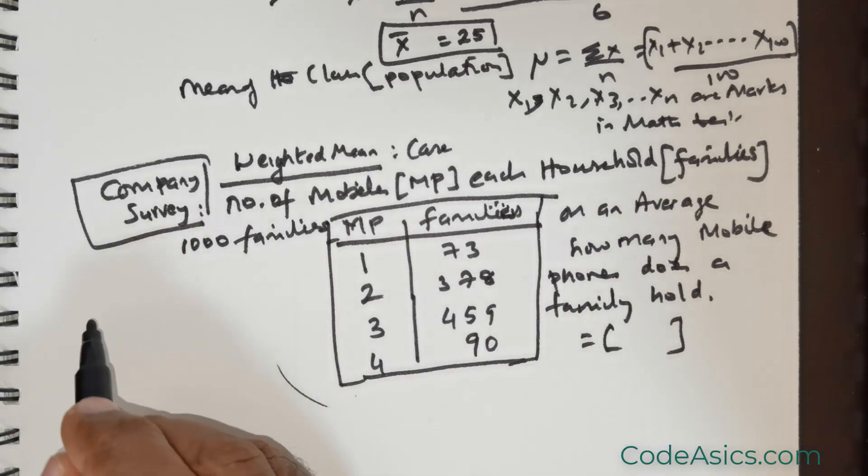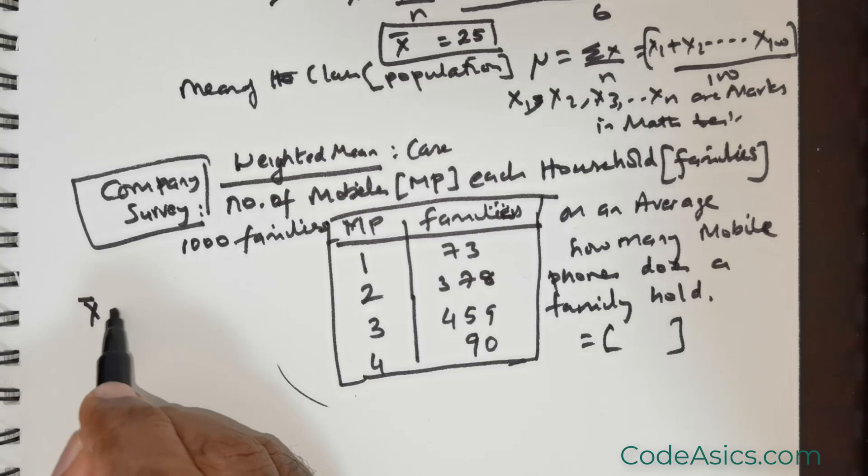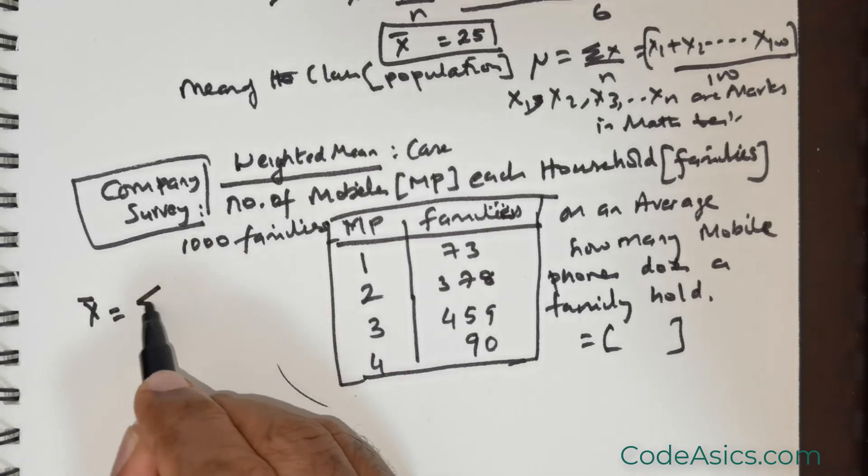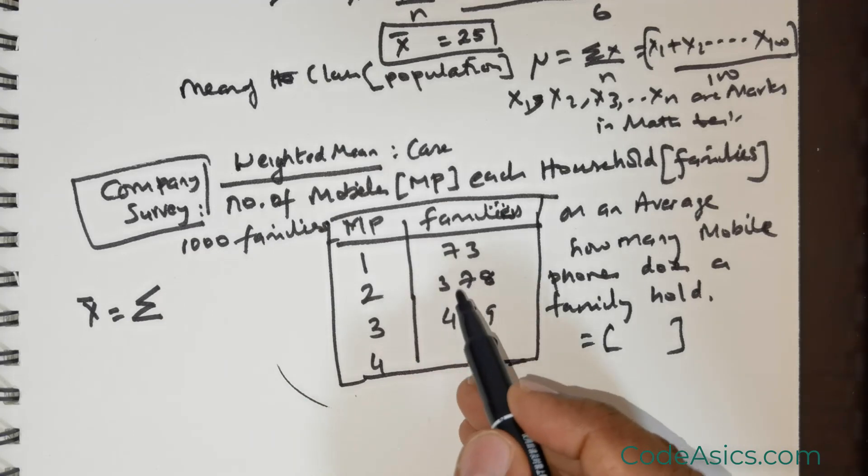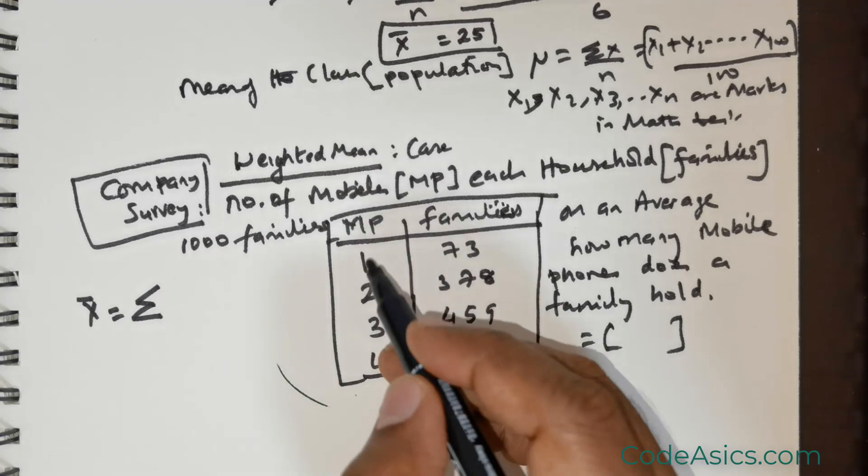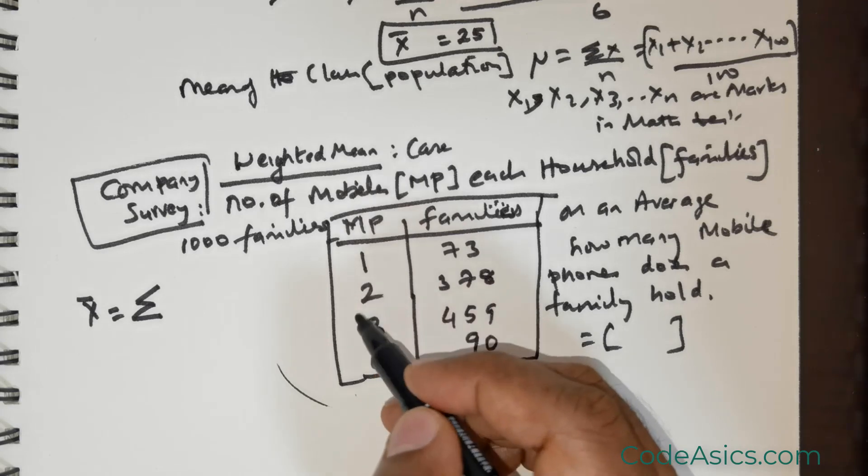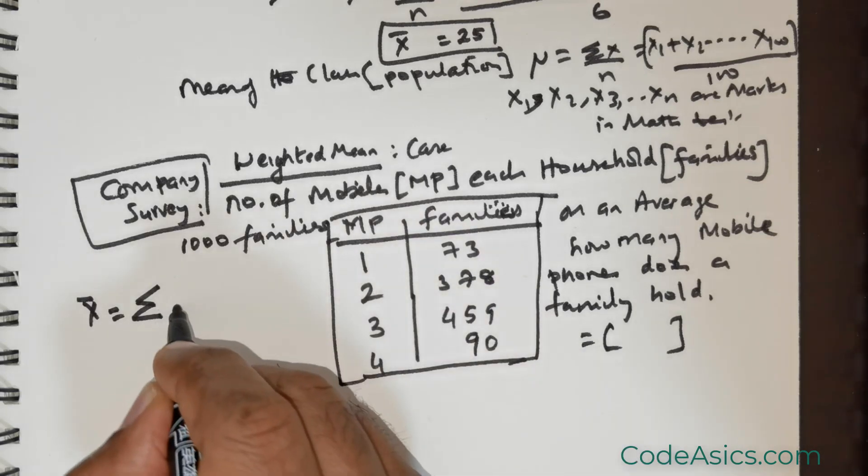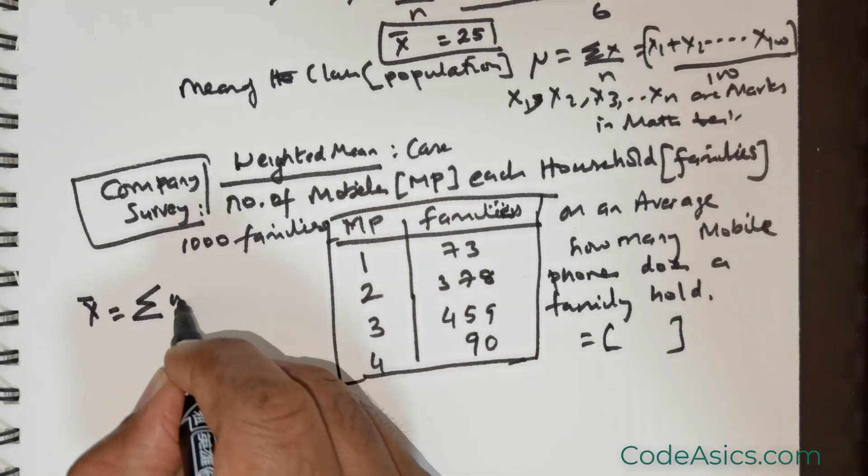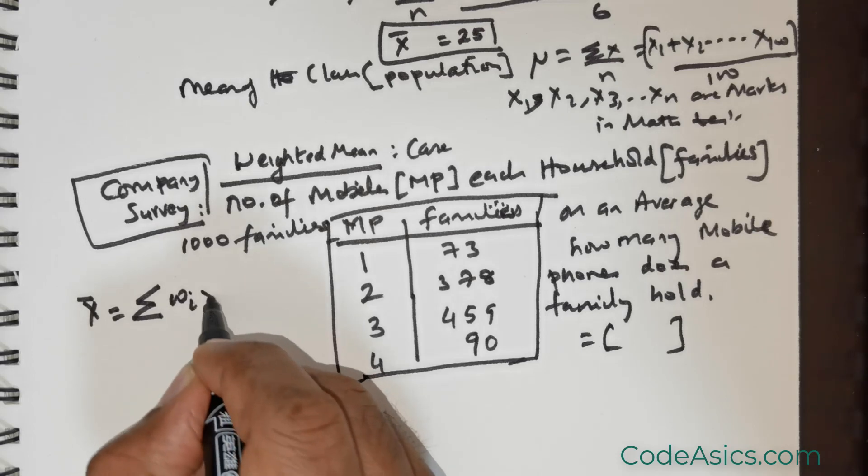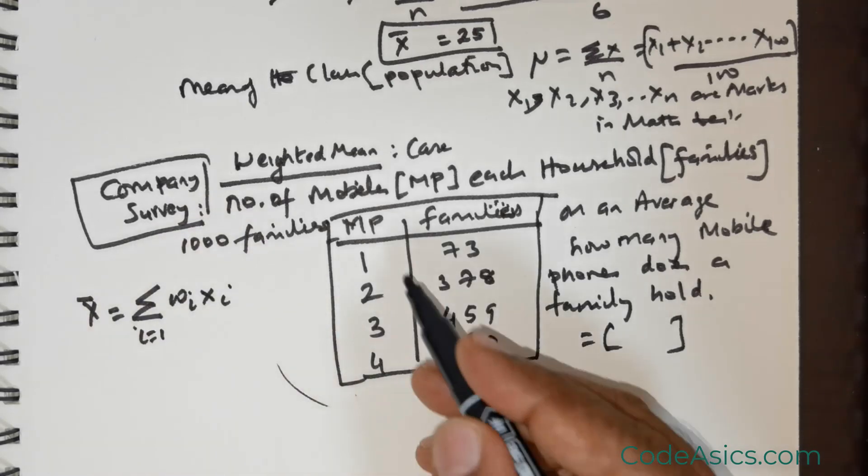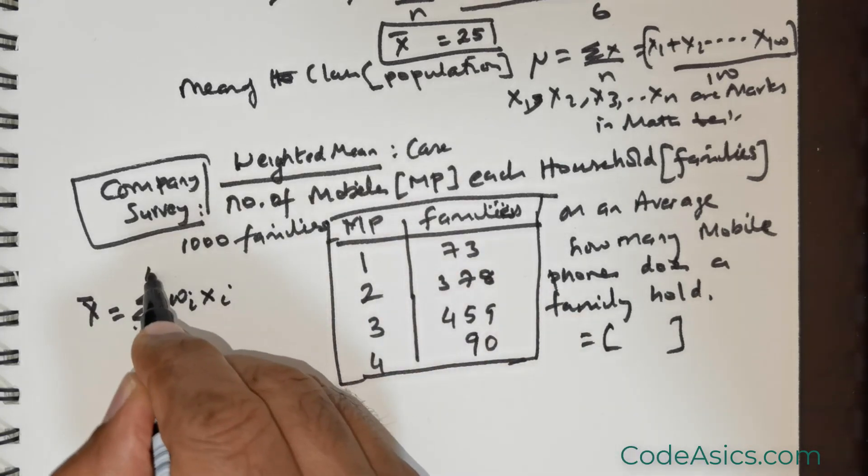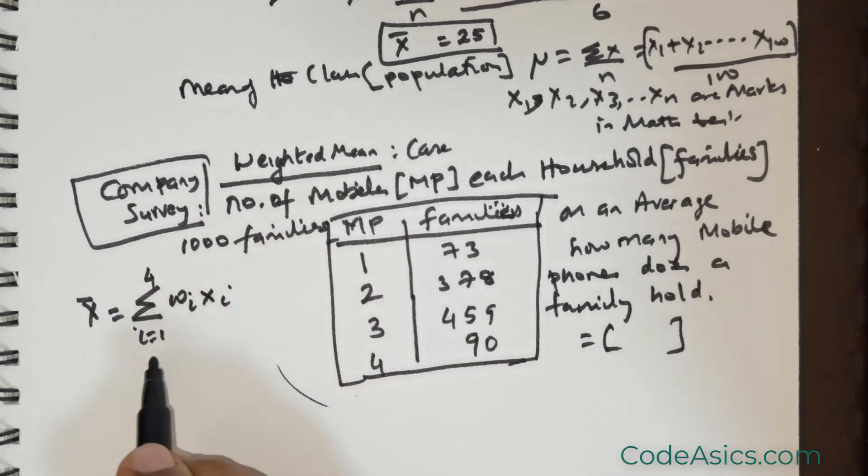Now what we need to do is use this formula. X bar is equal to sigma - these are taken to be the weights, and these are taken to be the x's. So we would write the formula like this: wi times xi, where i equals 1, 2, 3, 4.